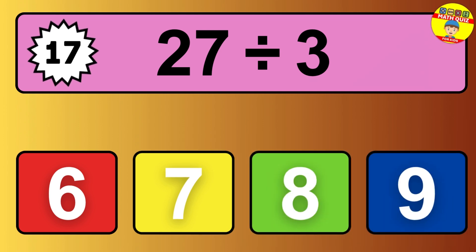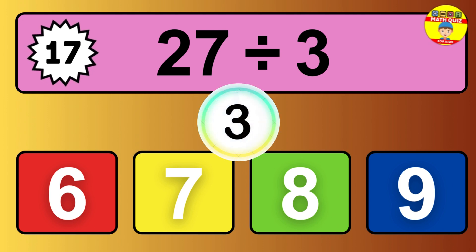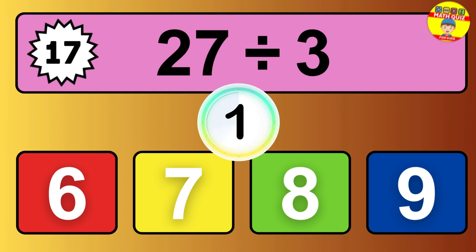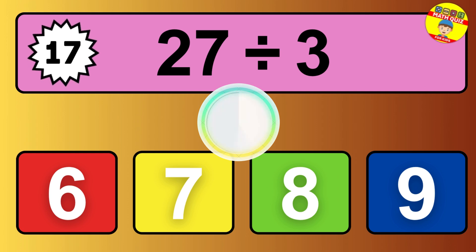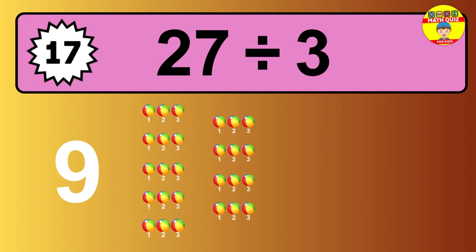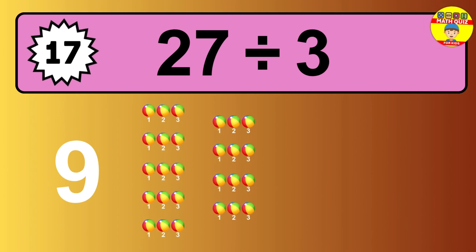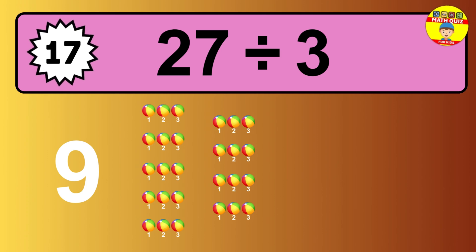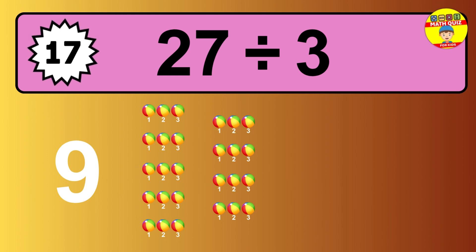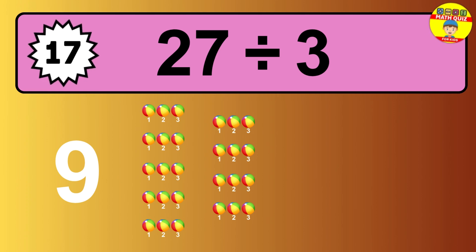27 divided by 3 — time to think. Let's go to the solution. Divide the number 27 by 3. Each group contains 3 units, so dividing 27 by 3 results in 9 equal groups. Thus, the result is 27 divided by 3 equals 9.